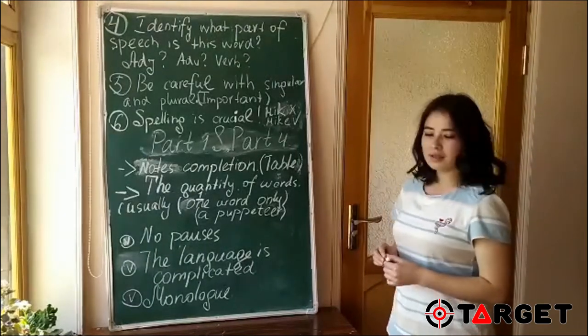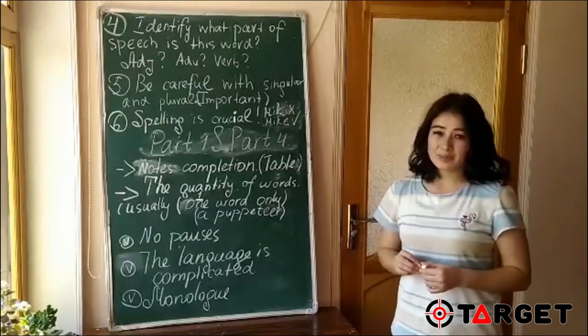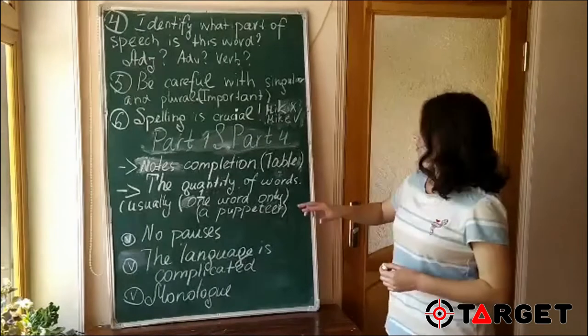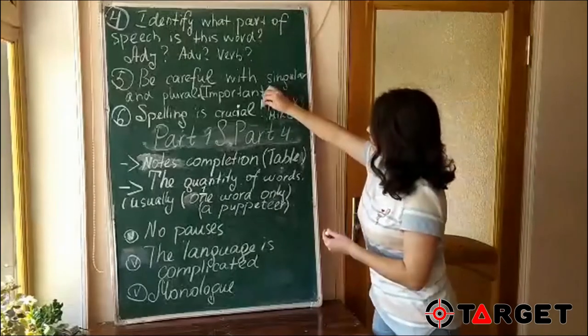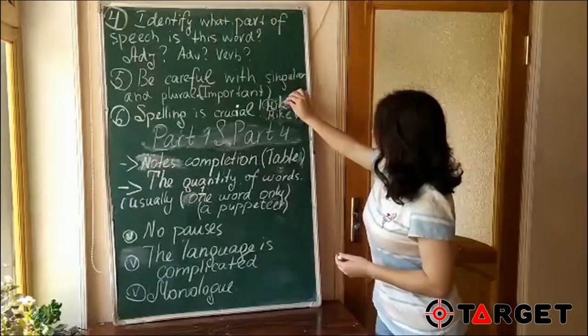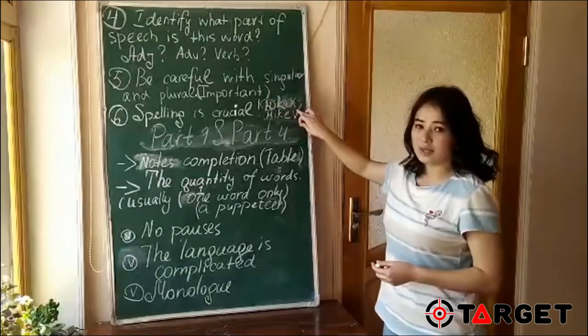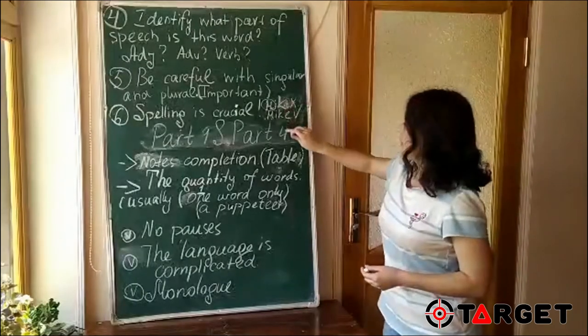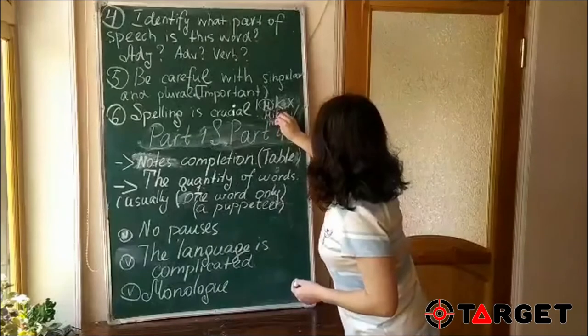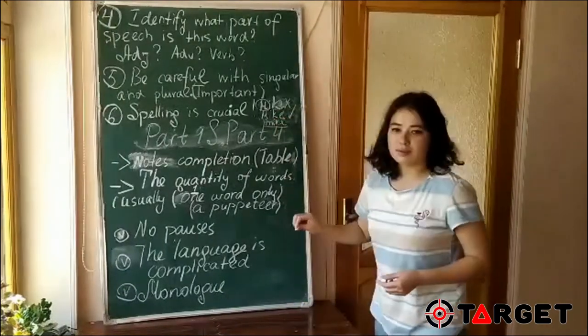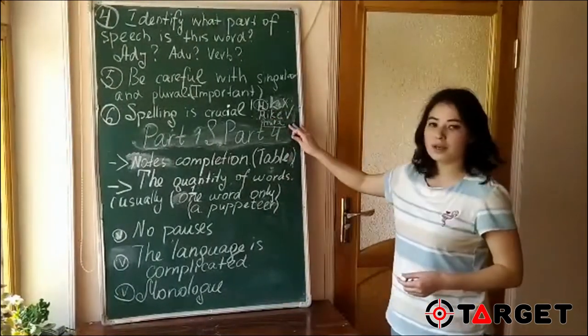Tip number six, spelling is crucial. Capitalization is not really important because look at this example: Mike. I wrote it with capital, but you see one letter is not here, the letter E. That's why it will be incorrect. But if you write with all the letters or with small letters, you are golden, there's no problem. It will be correct.